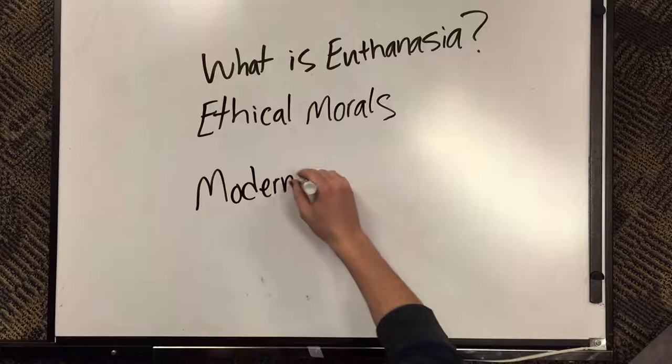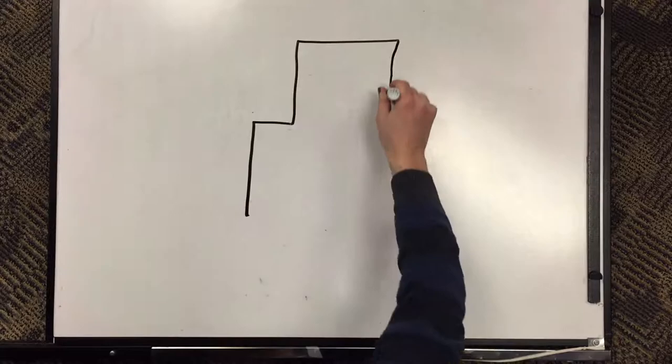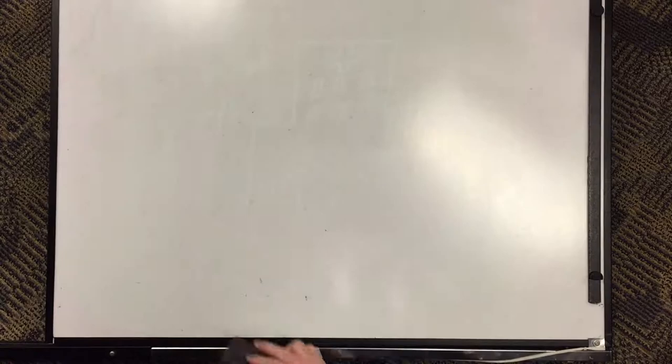What is euthanasia? Euthanasia is a controversial topic up for discussion that affects both ethical morals and modern medicine. The controversy lies where euthanasia should be allowed in hospitals and hospices, and whether a patient should be given the right to decide when they die.